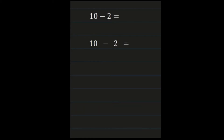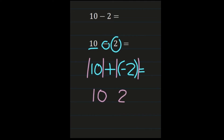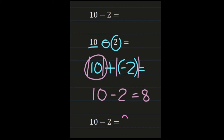For our next problem, we have ten minus two. Let's walk through this using our subtracting integer rules. We look at the first number and keep it exactly how it is, so the positive ten remains ten. We change the subtraction sign to addition, and we change the sign of the second number, so the positive two becomes a negative two. You may want to add parentheses so you can see that you're adding a negative. Now we're adding integers with different signs: the absolute value of ten is ten, the absolute value of negative two is two. We subtract them — ten minus two is eight. Looking at the number with the largest absolute value, the ten, our answer is positive eight.